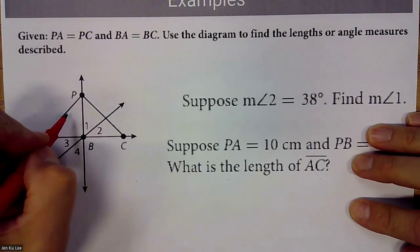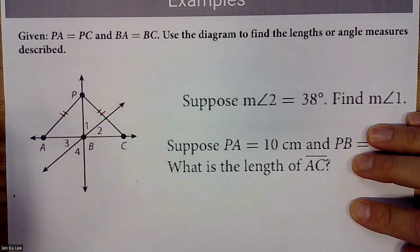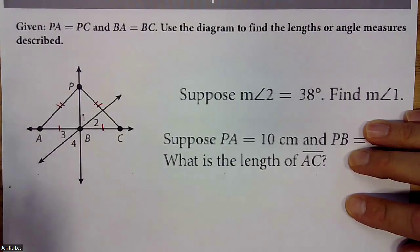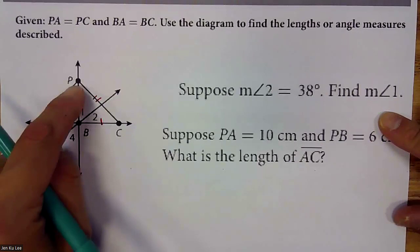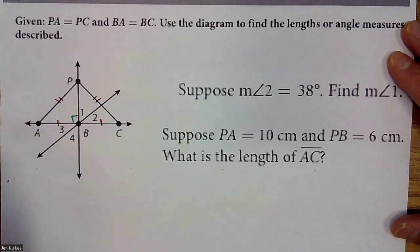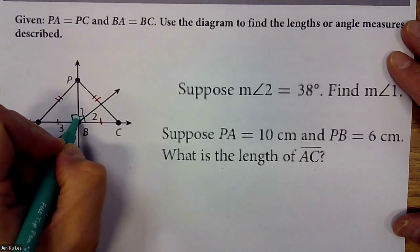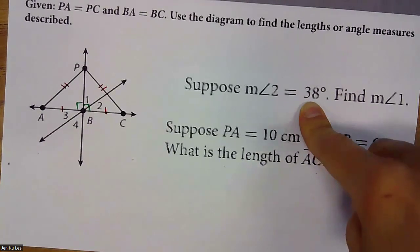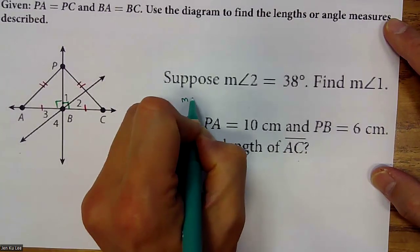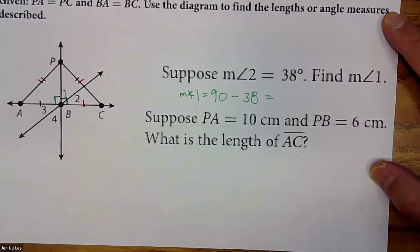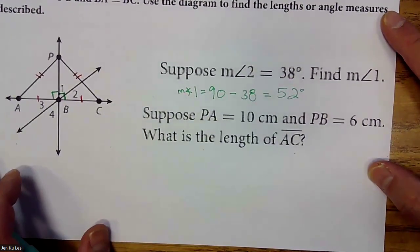Given PA is congruent to PC, and BA is congruent to BC. If I know it's an isosceles triangle, I also know those angles are 90 degrees. If angle 1 plus angle 2 equals 90 degrees, and the measure of angle 2 equals 38, then find the measure of angle 1. The measure of angle 1 equals 90 minus 38, which is 52 degrees.